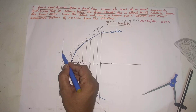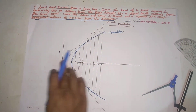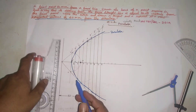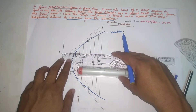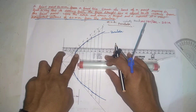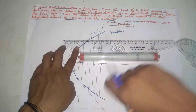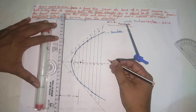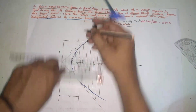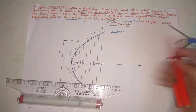In the directrix, measure a horizontal distance of 40mm. This gives us the meet point, which is the P-point on the parabola. The directrix is 40mm away horizontally from the P-point.